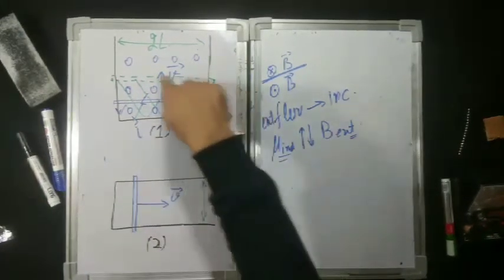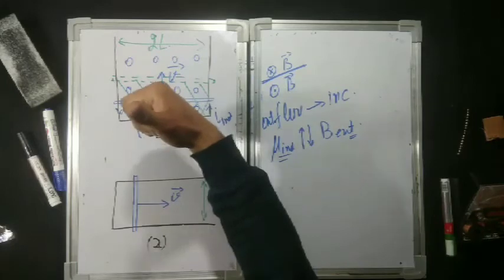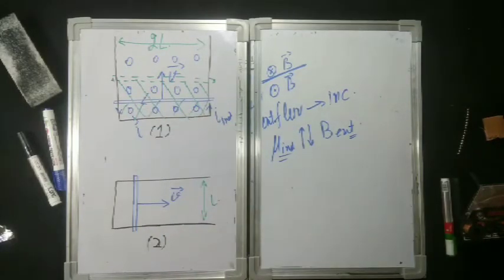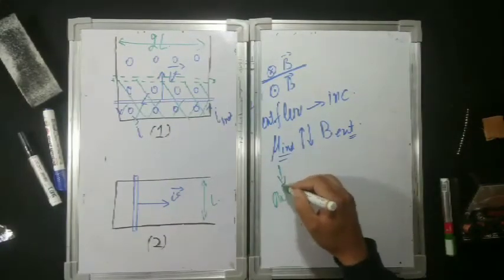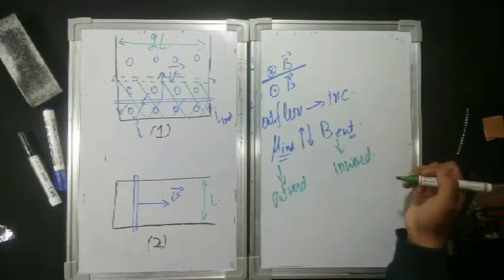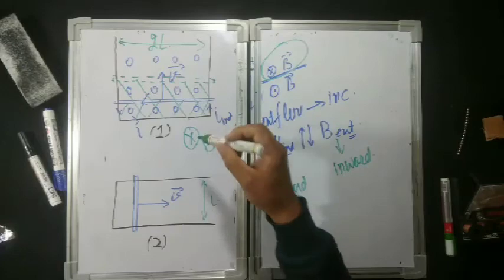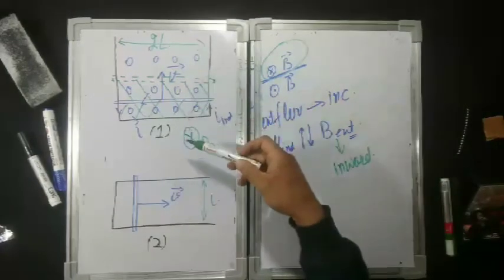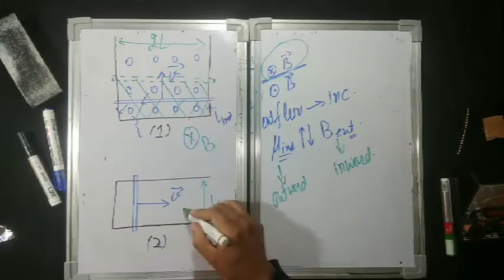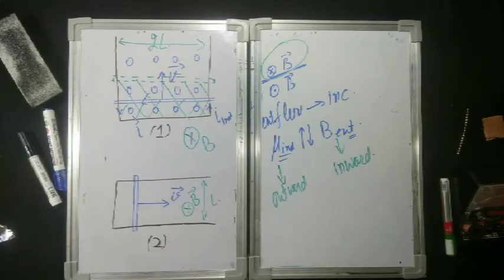The current is induced counterclockwise. Using the right-hand thumb rule, if current is counterclockwise, the induced dipole moment is outward (upward out of the page). Therefore, the external magnetic field is inward (into the page). Since both circuits are in the same magnetic field, the field is inward for both. So the answer to Part A: the magnetic field is into the page.